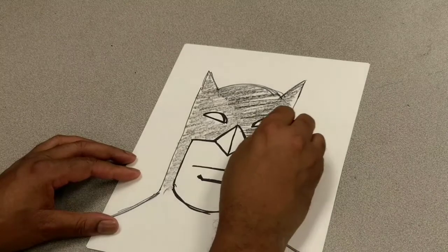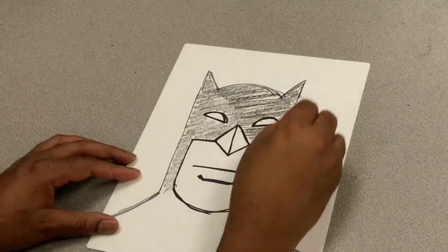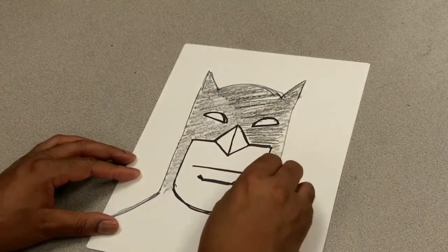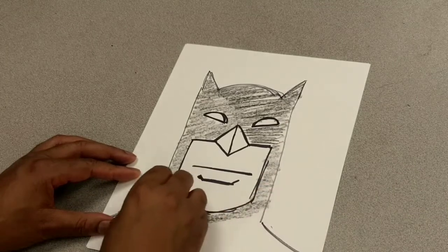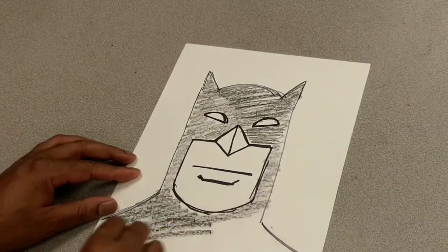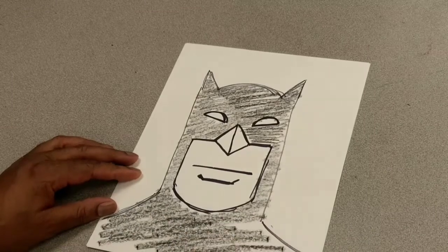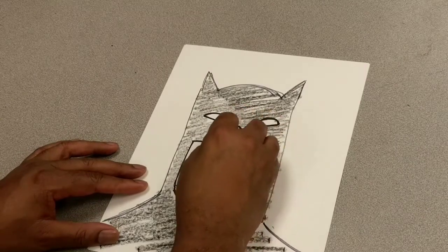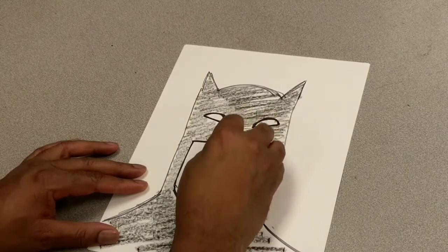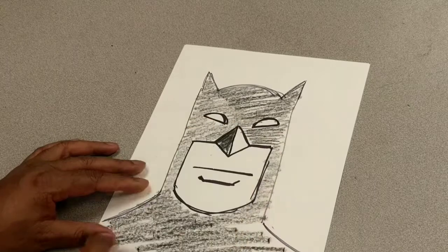See what I'm doing? We're coming all the way down. I'm doing this very quickly, guys. Usually, when you do artwork, you take your time. I'm doing this very quickly just to give you an idea. Looks like Batman already. Then, I go on this side and make this side dark. Like that.